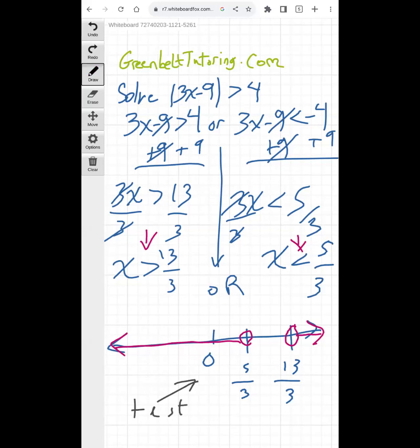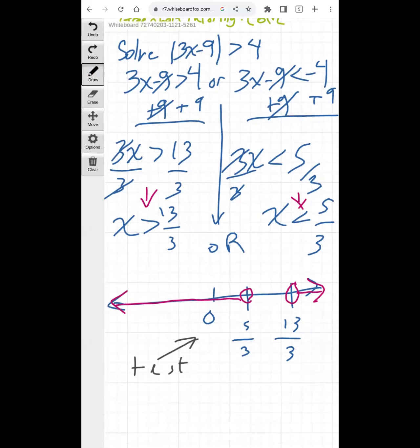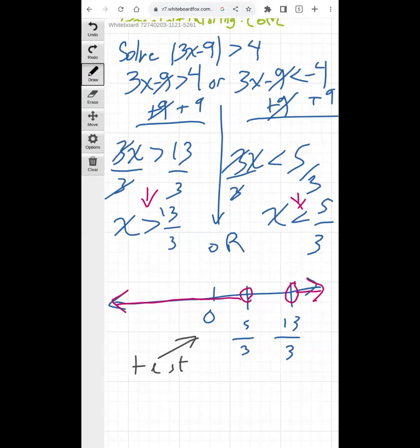So if x equals 0, you substitute into the original inequality. The absolute value of 3 times 0 minus 9 would have to be greater than 4. So 3 times 0 is 0, 0 minus 9 is negative 9. Absolute value of negative 9 is 9. 9 is greater than 4, so that solution works out okay.